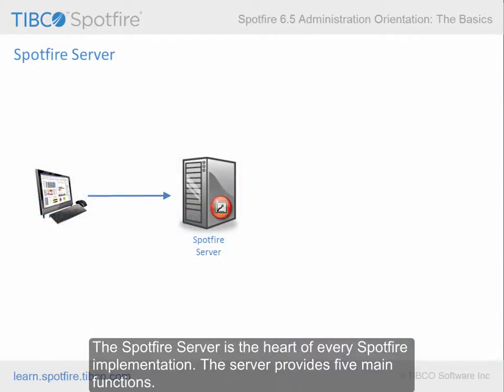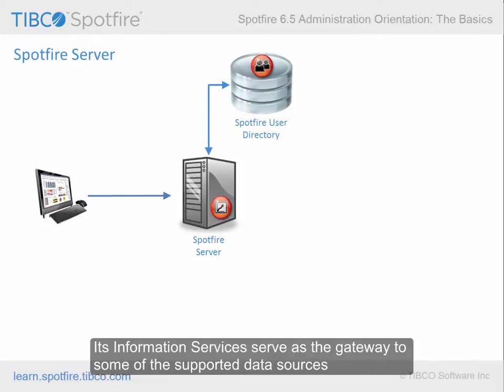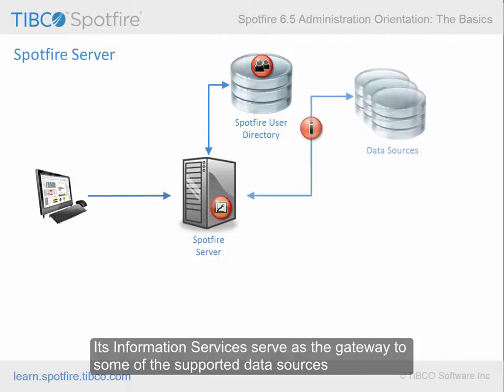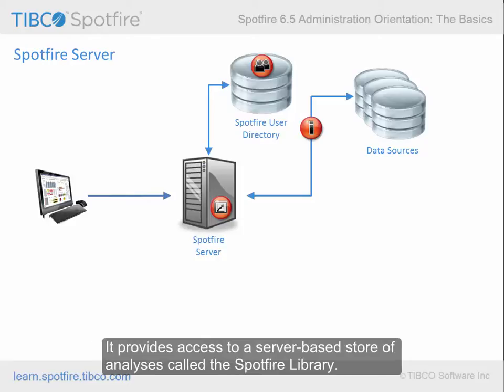The Spotfire server is the heart of every Spotfire implementation. The server provides five main functions. It authenticates and authorizes Spotfire users with the help of the Spotfire user directory. Its information services serve as the gateway to some of the supported data sources. It provides access to a server-based store of analyses called the Spotfire library.